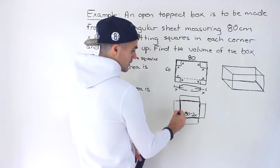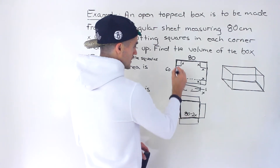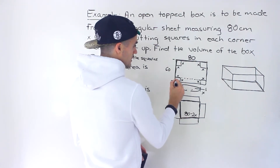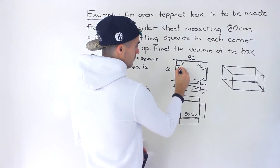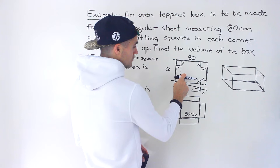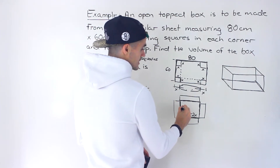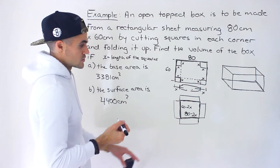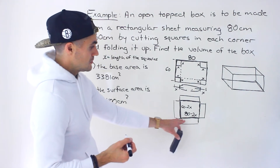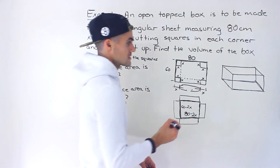The same thing applies for the width. The entire thing is 60. If we cut out this x and cut out this x, what's the remaining length going to be? That's going to be 60 minus 2x. So 80 minus 2x is the length of the base, and 60 minus 2x is the width of the base.